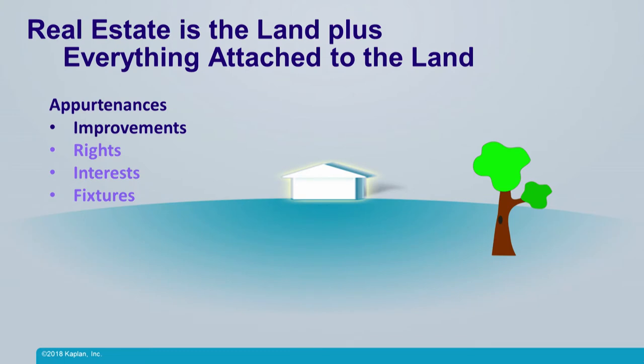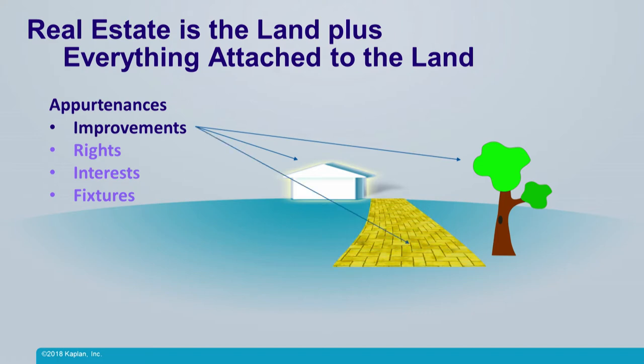First of all, improvements. Improvements are things that are attached to the land with the intent of being permanent. So it's everything that's attached — the trees, the shrubs, the grass, the building is an improvement. Anything that you construct in a permanent manner, like if you put in a driveway, that's an improvement and it runs with the land. When you buy the real estate, you get the land plus those improvements.